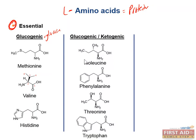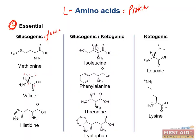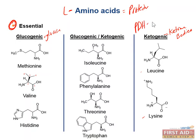The purely ketogenic amino acids include leucine and lysine — these can be converted to ketone bodies. Remember that leucine and lysine are the purely ketogenic ones. You would give purely ketogenic amino acids as a treatment in pyruvate dehydrogenase deficiency, since pyruvate dehydrogenase deficiency requires giving ketogenic amino acids to bypass the deficient enzyme.